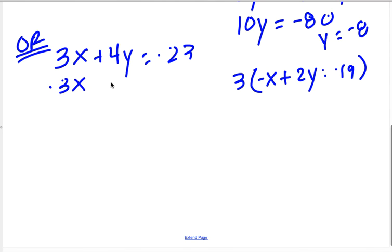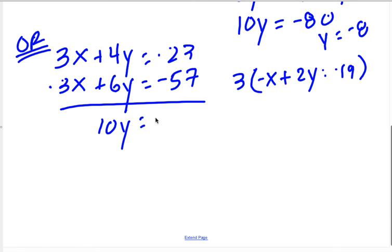So you'd get -3x + 6y = -57, and when you add straight down, there's your 10y = -80 again, and again, you get y = -8. So again, you get the same answer.